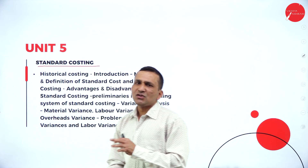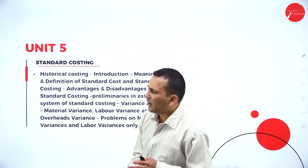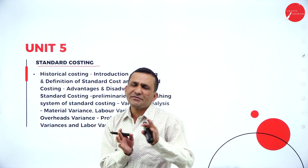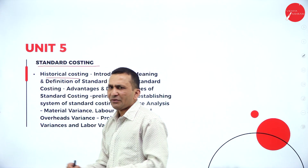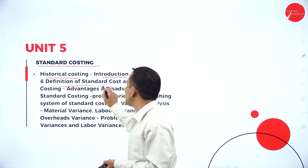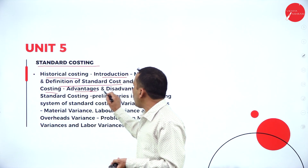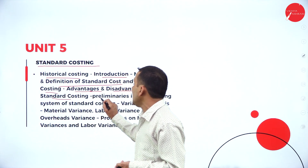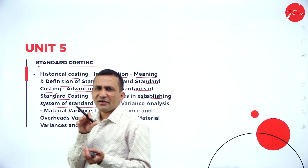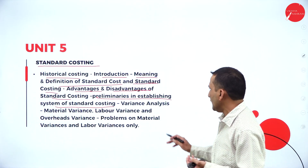The fifth unit is Standard Costing. The name itself suggests that to set any standard, we refer to historical costing — whatever we have followed previously. You will get to know the meaning and definition of standard cost and standard costing, the advantages and disadvantages of standard costing, and the preliminary stages involved in establishing a standard costing system for the first time.